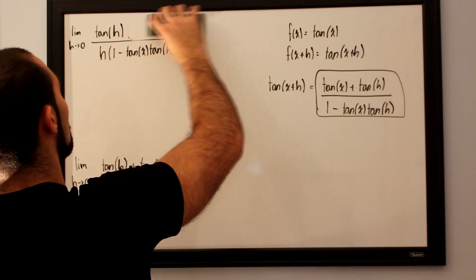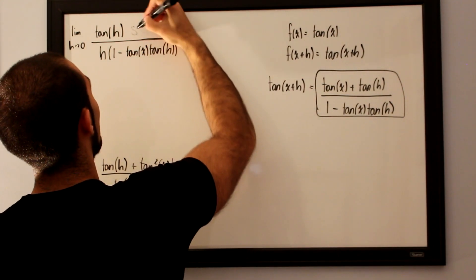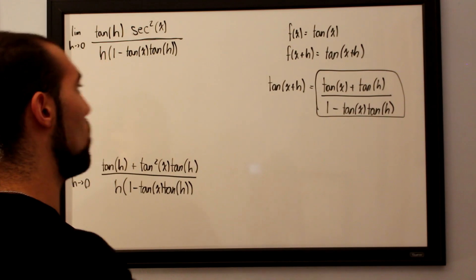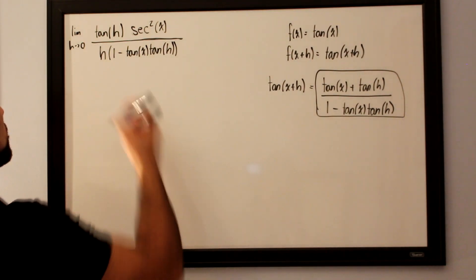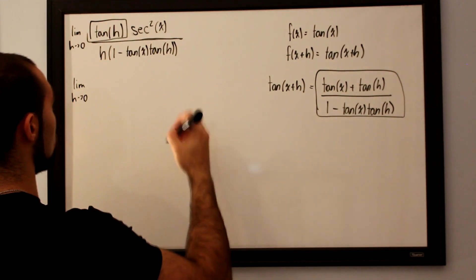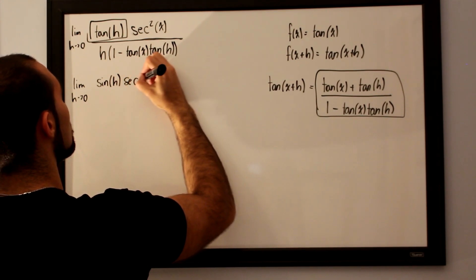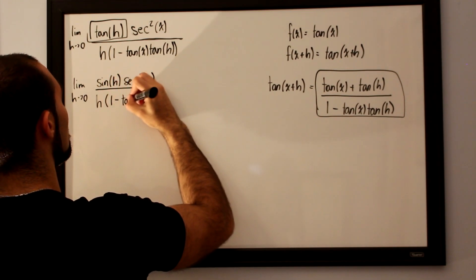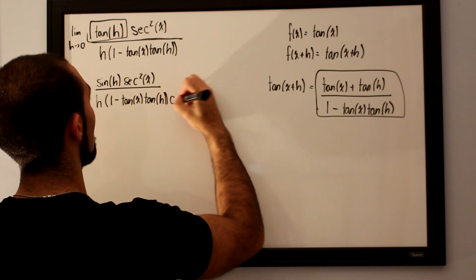This is equal to tan(h) multiplied by sec²(x). We then split up the tan(h) term into its two constituent functions: sine of h over cosine of h. Taking the limit as h approaches 0, the cosine of h drops into the denominator, giving us sine of h · sec²(x) over h multiplied by 1 minus tan(x)·tan(h), and then a cosine of h.